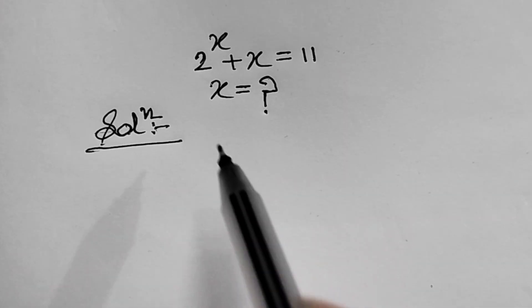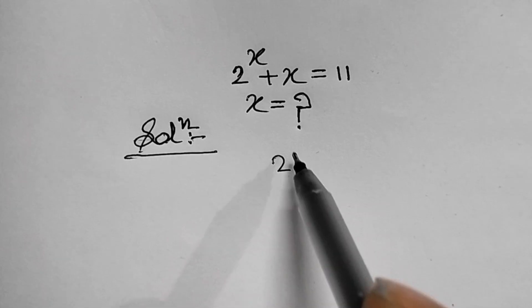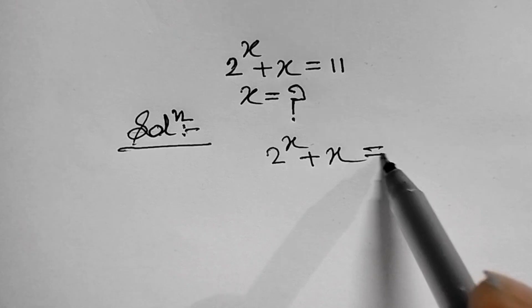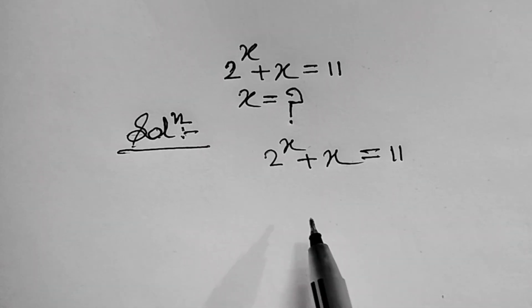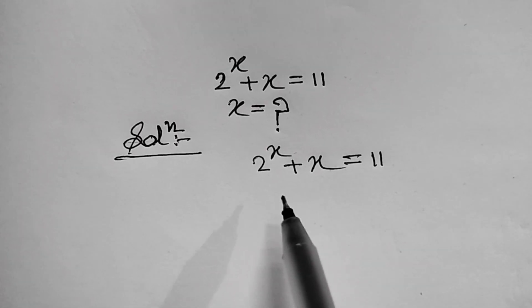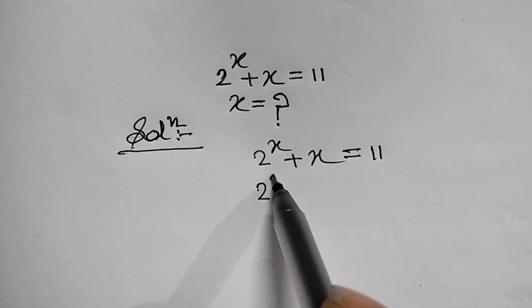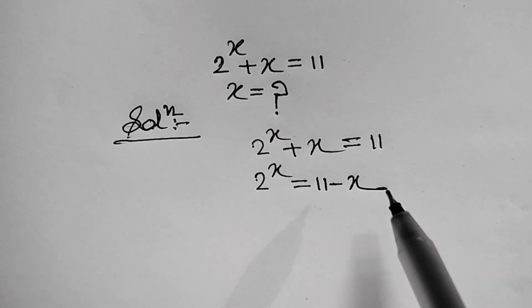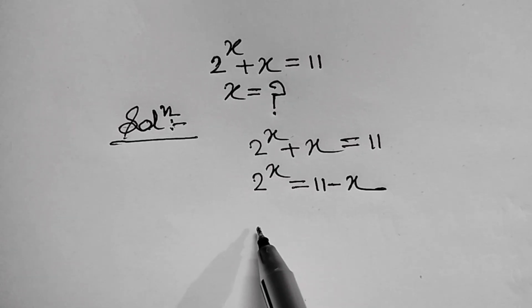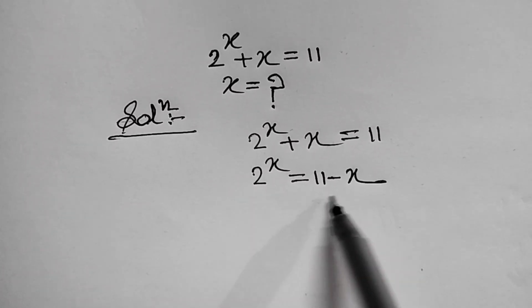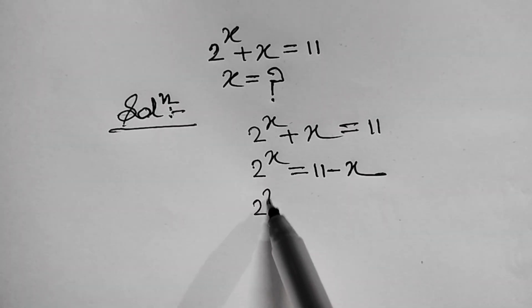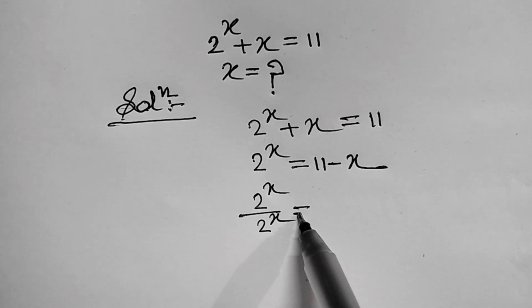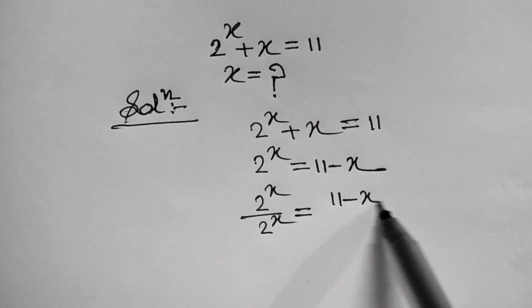First of all, we write the given question, that is 2 to the power x plus x equal to 11. Now, this equation can be written as 2 to the power x equal to 11 minus x. Now, we will have to divide both sides by 2 to the power x. Therefore, dividing both sides by 2 to the power x, we get 2 to the power x upon 2 to the power x equal to 11 minus x upon 2 to the power x.